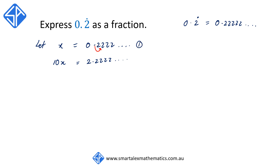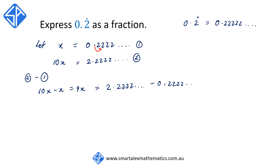We call the first equation 1, the second equation 2, and we say equation 2 take away equation 1, so that we get 10x minus x which is equal to 9x, and on the right hand side this is equal to 2.222 minus 0.222. If we line this up, we see that all the digits after the decimal point cancel each other out, so we're left with simply 2.0.